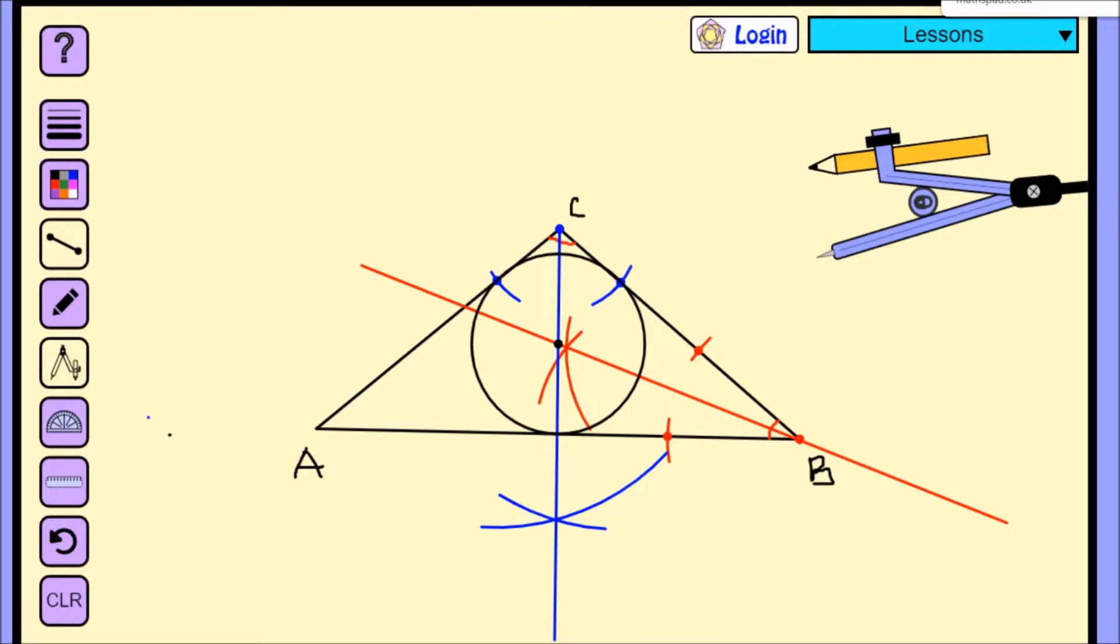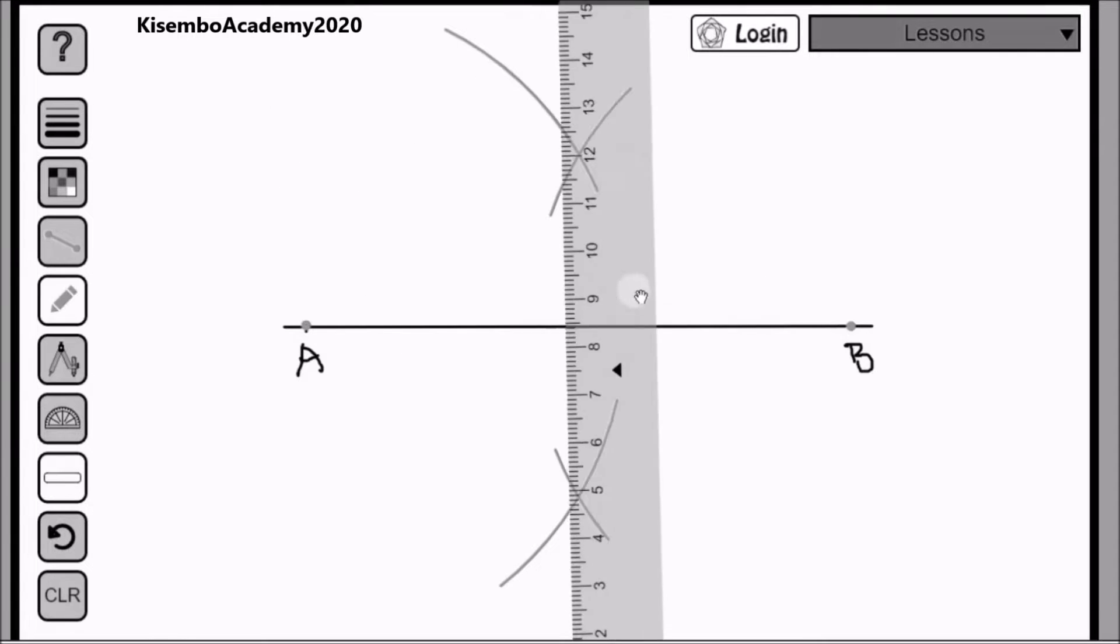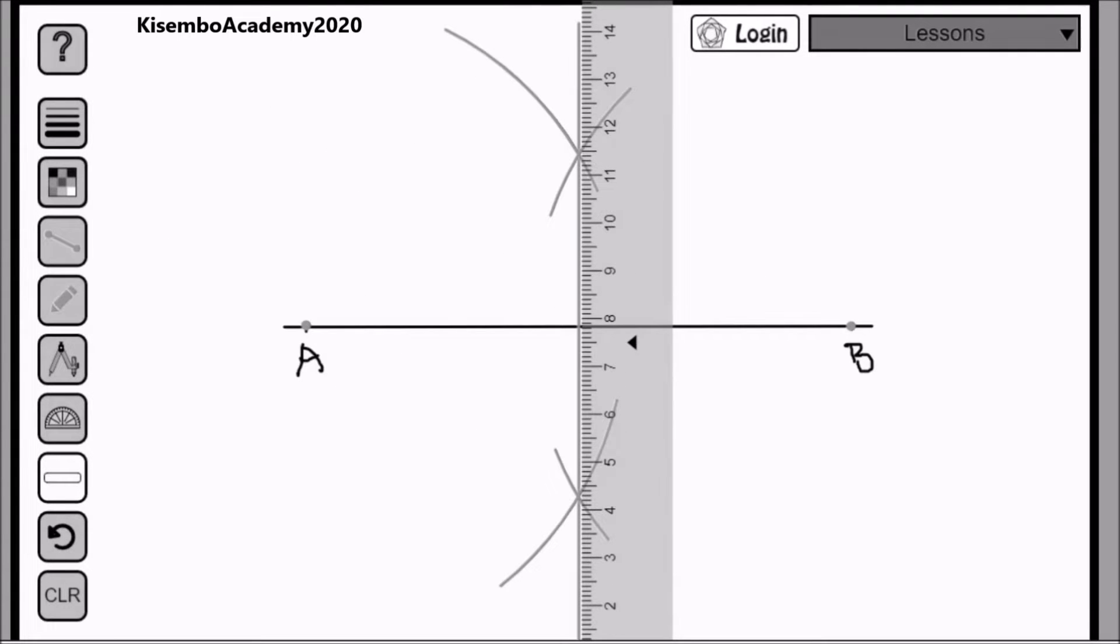Now by this, I am assuming that you are very familiar with the procedures for bisecting both a line and an angle, because you can only comfortably do this when you are familiar with the procedures for bisecting a line and an angle.